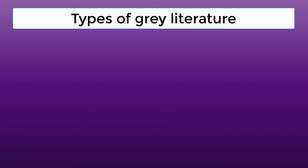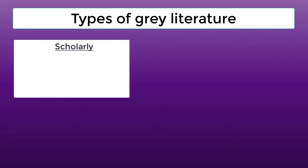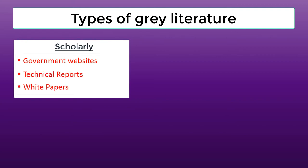Gray literature can include anything from research reports to datasets to social media, and is used across many different disciplines. There are various types of gray literature, including scholarly, which is made up of government websites, technical reports, and white papers, amongst others.